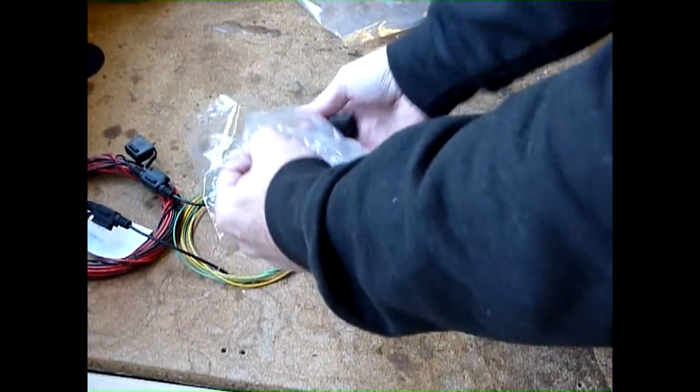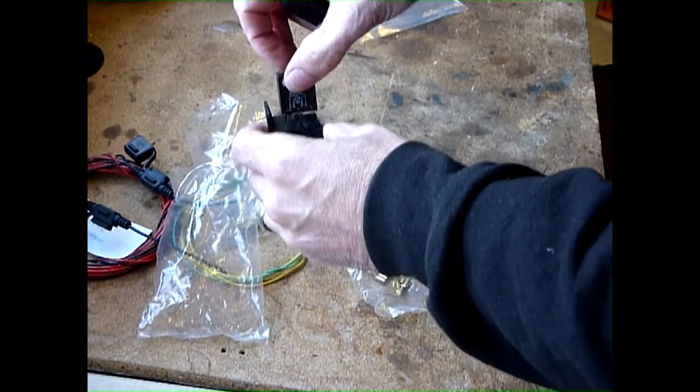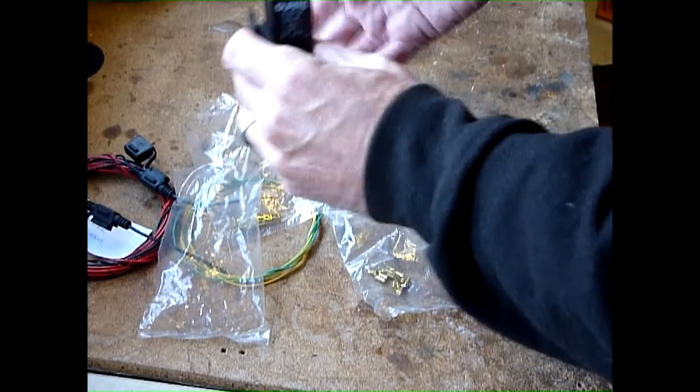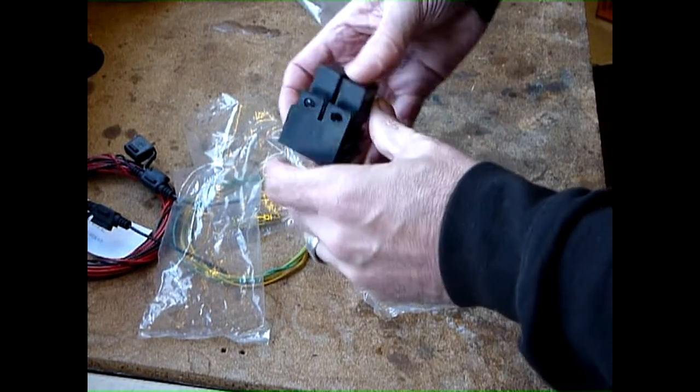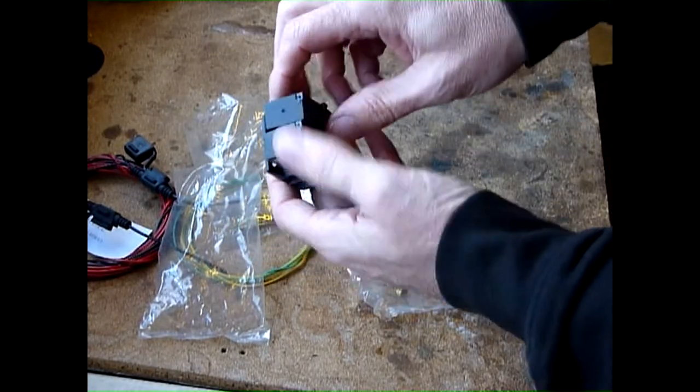And then the relays will sit in the top. And then that will be bolted to the bike, or more likely cable tied, until I can get around to bolting it. All the cables go in the bottom.